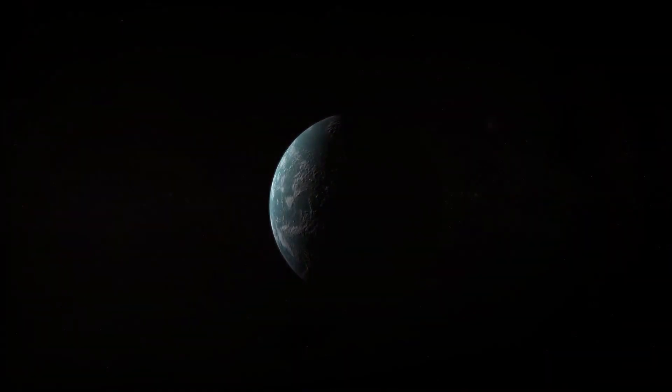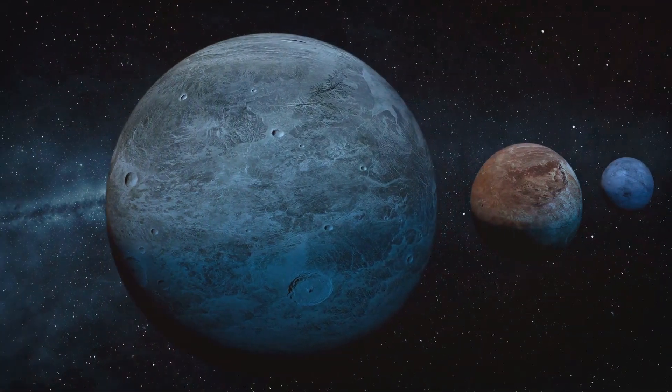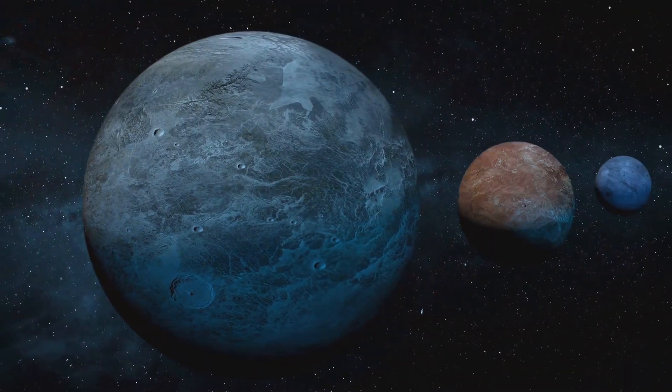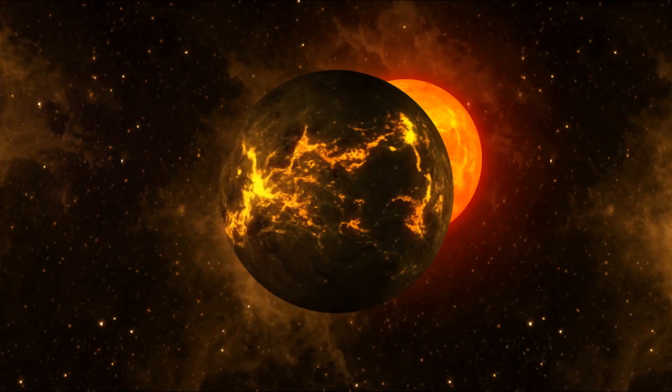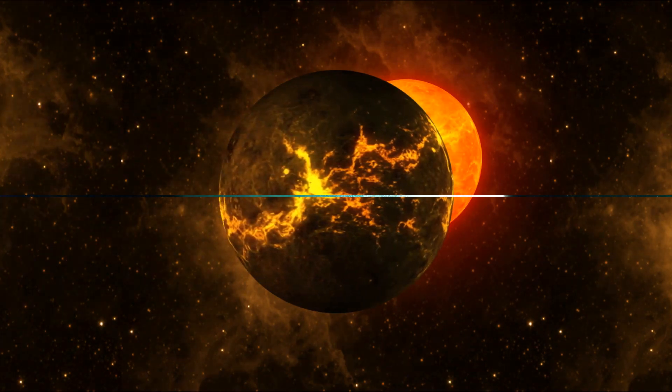This close proximity to its star accounts for the scorching temperatures, making this planet a real-life hell. Its intense heat and rocky terrain make it one of the most extreme exoplanets we've discovered so far. Kepler-10b, a planet where a year lasts less than a day, and the surface is more than hot enough to melt iron.